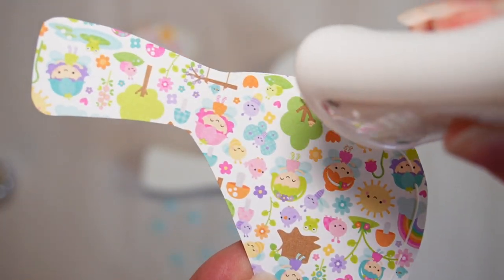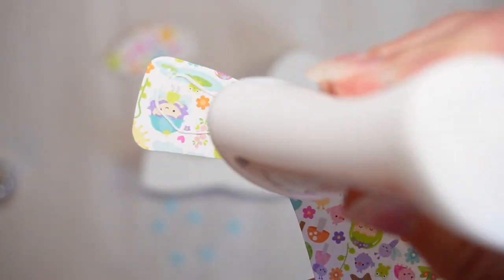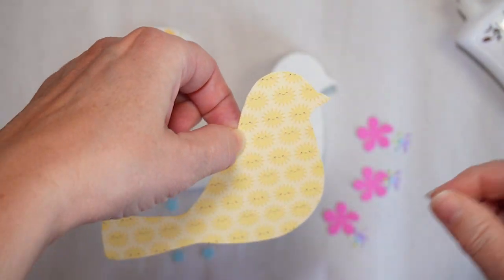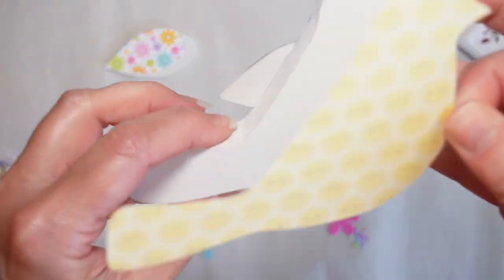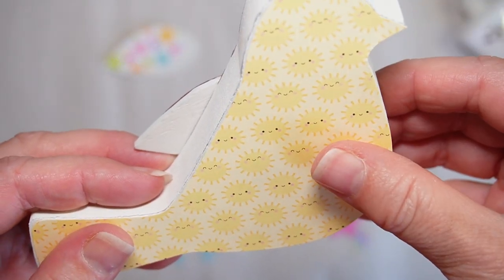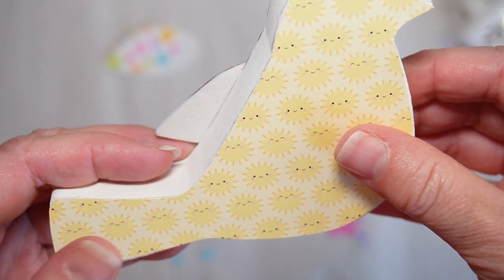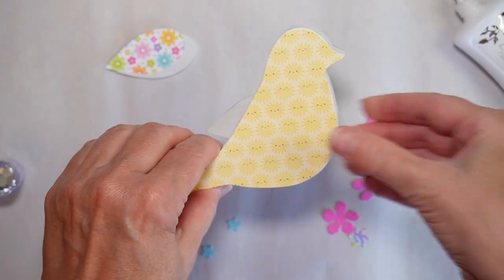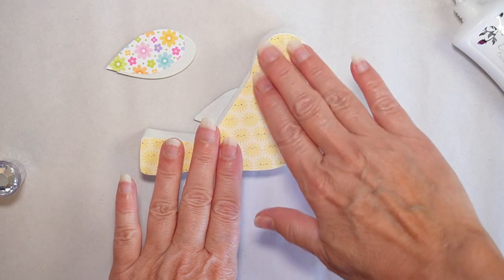Look at those cute little images on this Doodlebug paper. I love it. Almost hate to cover them up. Using liquid glue gives me a little bit of wiggle room so that I can make sure I'm going all up to the edges and it's pretty straight.